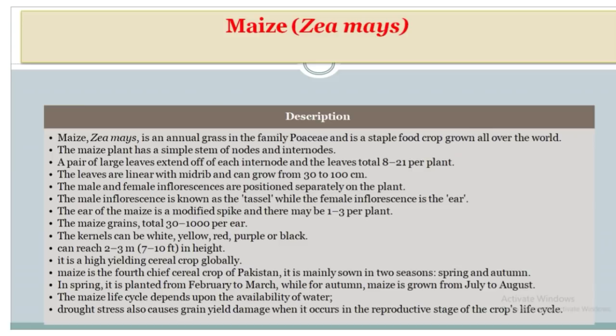Maize is a highly yielding cereal crop globally and is the fourth chief cereal crop of Pakistan. It is mainly sown in two seasons — spring and autumn. In spring, it is planted from February to March, while autumn maize is grown from July to August. The maize life cycle depends on the availability of water. Droughts also cause grain yield damage when they occur during the reproductive stage of the crop life cycle.